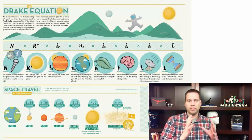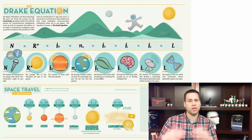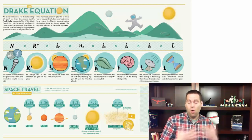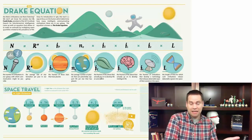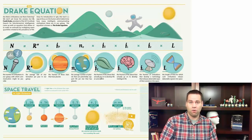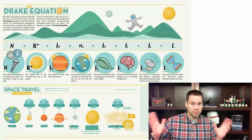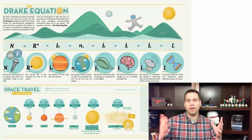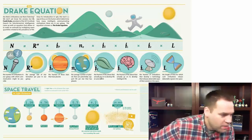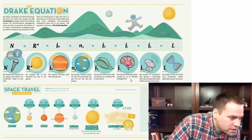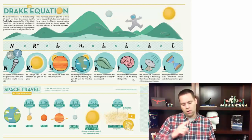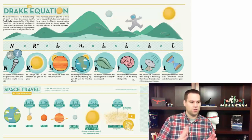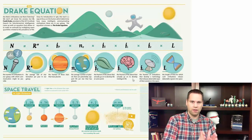Next is the fraction of those planets that actually go on to develop life at some point. We only know of one planet where this has happened, but you could guess — maybe one in a thousand or one in ten thousand earth-like planets develop life, or optimists at SETI might say a hundred percent. Then there's the fraction that go on to develop intelligent life, since having grass or amoebas doesn't mean you'll have an intelligent civilization.